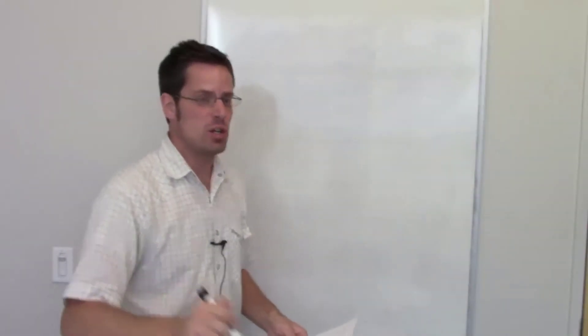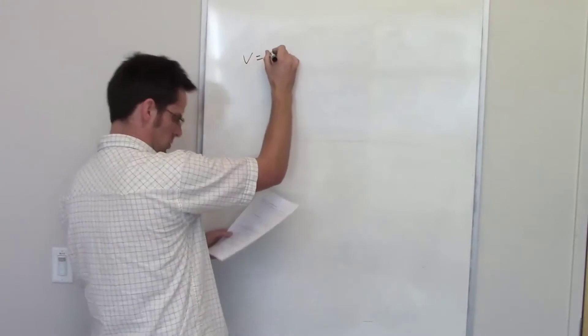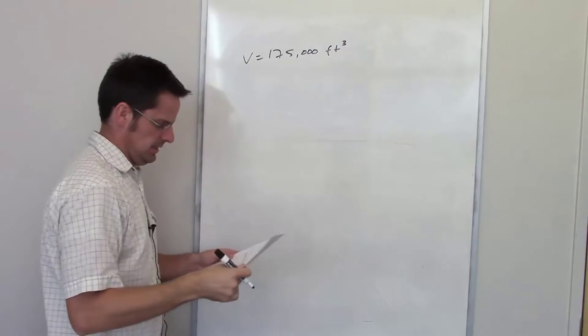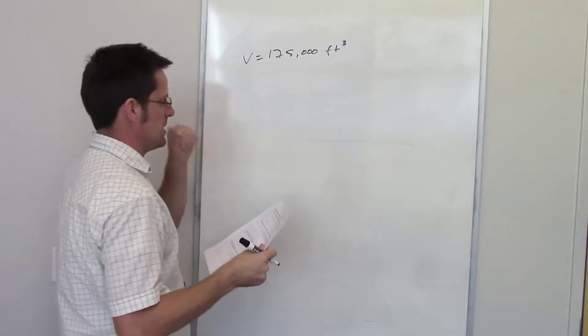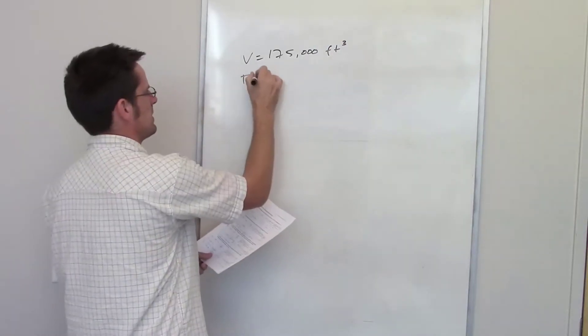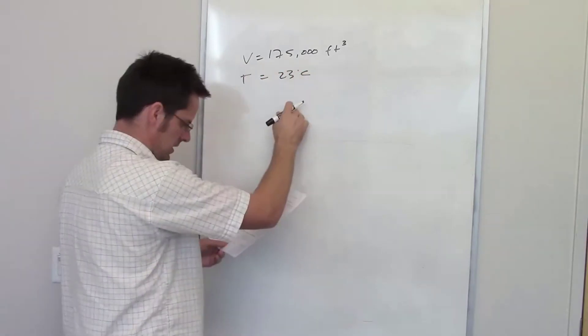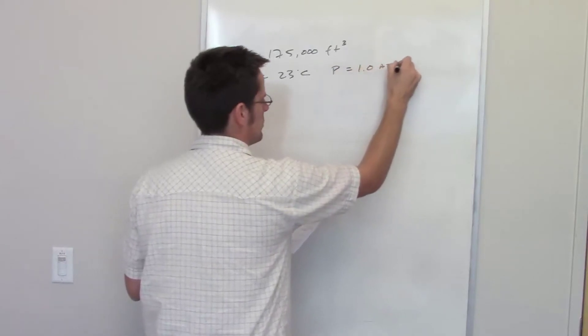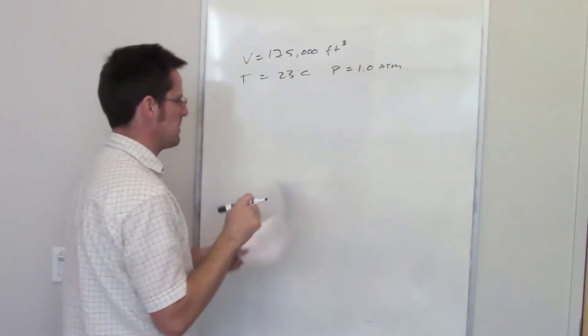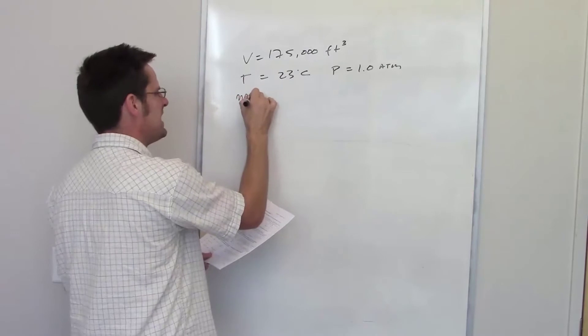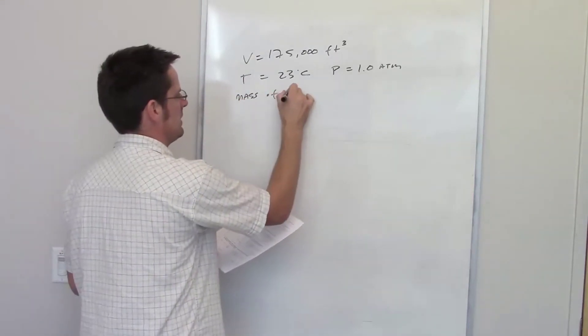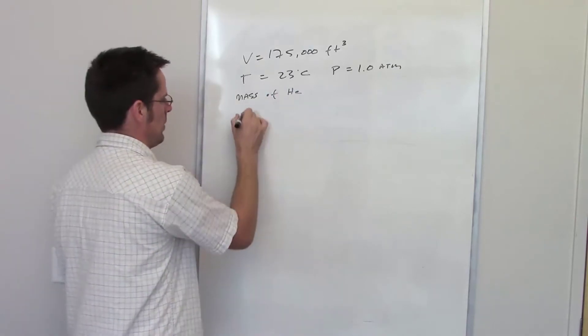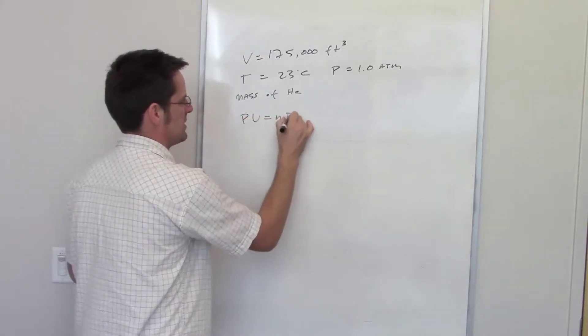This next problem tells me that Goodyear blimps hold approximately 175,000 cubic feet of helium. So that is the volume. It then tells me a temperature, 23 degrees Celsius. It gives me a pressure as being 1.0 atmospheres, and asks me what the mass is of the helium in the blimp. We're of course going to begin by using the pervert equation, PV equals nRT. This is the ideal gas equation.